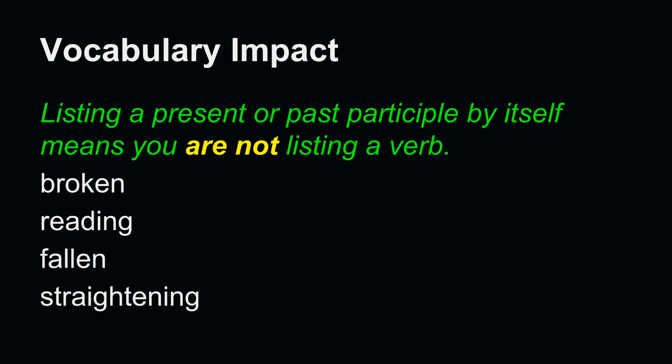Take a look at these. Broken, reading, fallen, or straightening. If I list any of these by themselves, they are either adjectives or nouns depending on their use in a sentence. If I wished to list the verb for broken, I would list its simple present tense, break, or read, or fall, or straighten. When I list break, read, fall, or straighten, I am listing a verb. If I list its participle, I am listing something else.